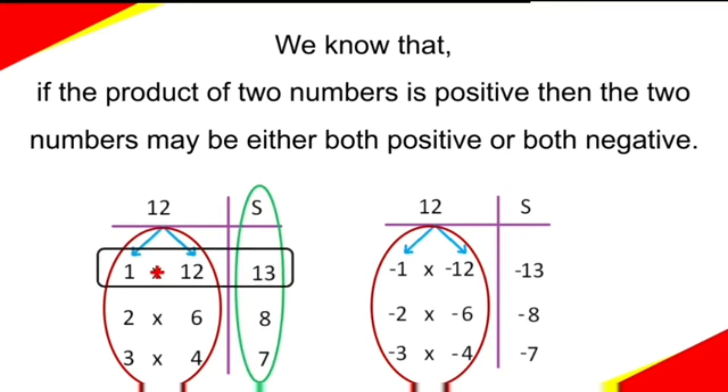1 + 12 = 13. 2 + 6 = 8. 3 + 4 = 7. In the same way, -1 + (-12) = -13. -2 + (-6) = -8. -3 + (-4) = -7.